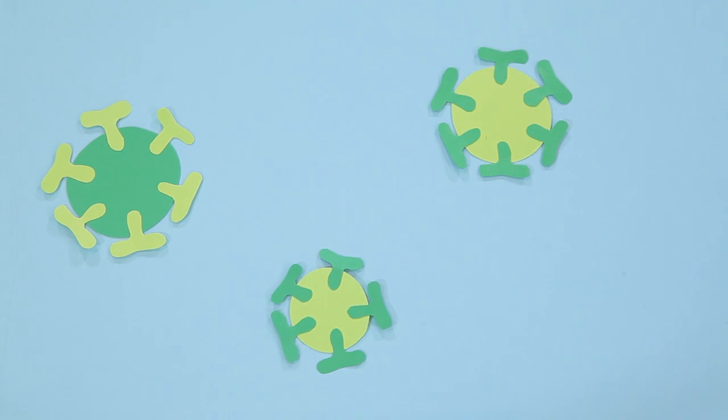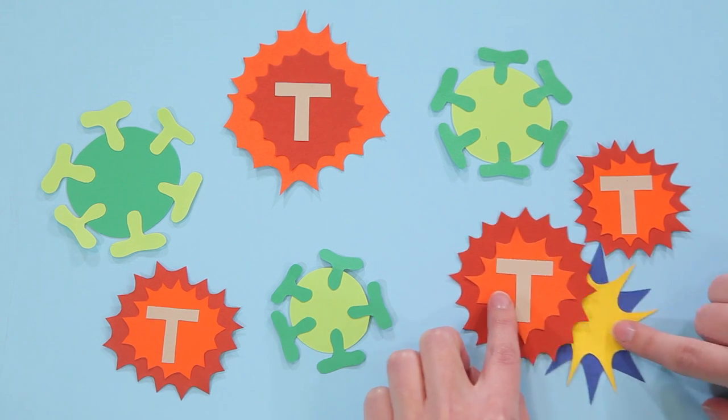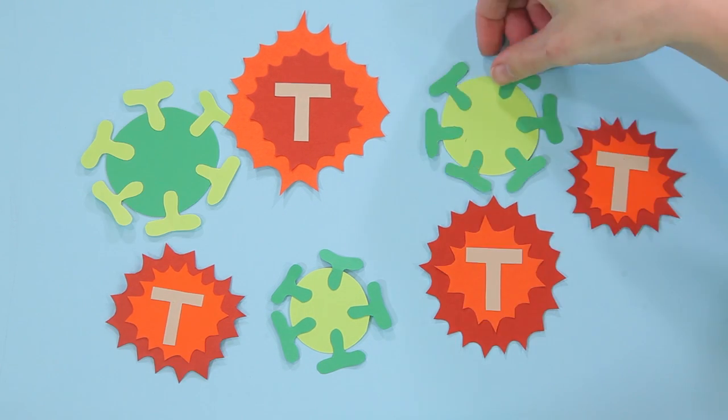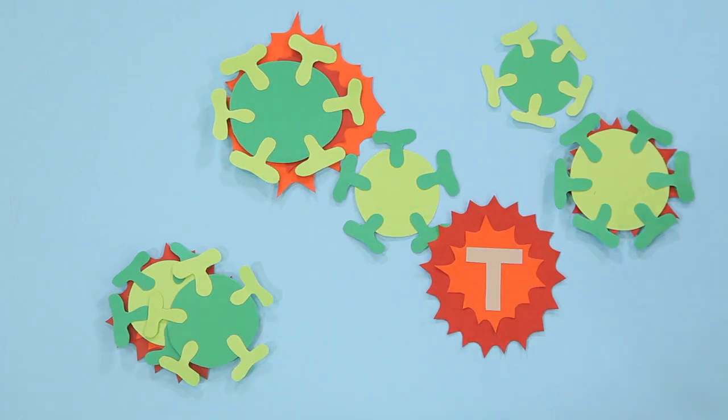When HIV attacks, it destroys white blood cells called T-cells, the cells working to fight disease. HIV not only attacks and kills T-cells, but it also uses them as a host to multiply and spread.